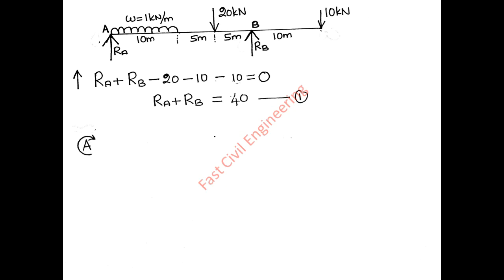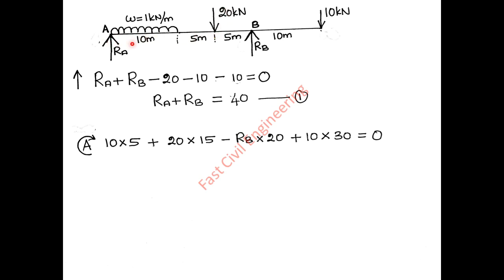Summation of moments about A equals zero. The 10 kN UDL force acts at its centroid, 5 meters from A, giving 10 into 5. The 20 kN load is at 15 meters, giving 20 into 15. RB acts at 20 meters in the anticlockwise direction, so minus RB into 20. Additionally, 10 kN at 30 meters acts clockwise, so plus 10 into 30 equals zero. Solving, RB equals 32.5 kN, and from Equation 1, RA equals 7.5 kN.